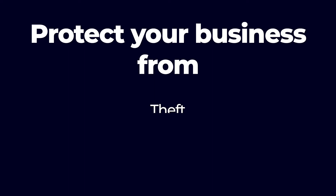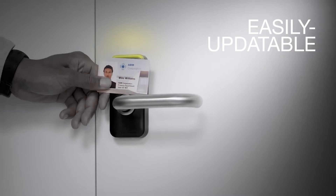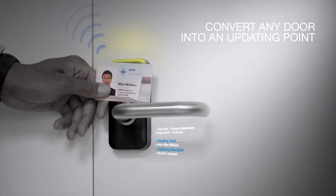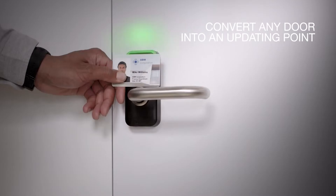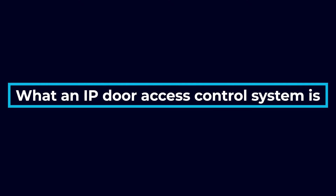To protect your business from theft, intrusion, and violent crimes, it is essential to install an access control system. Access control works 24/7 to block access to intruders and ensure only authorized employees and visitors can access your site. With security technology becoming more advanced every day, IP or internet protocol access control has become an increasingly popular option for businesses. To get started, let's go over what an IP door access control system is.